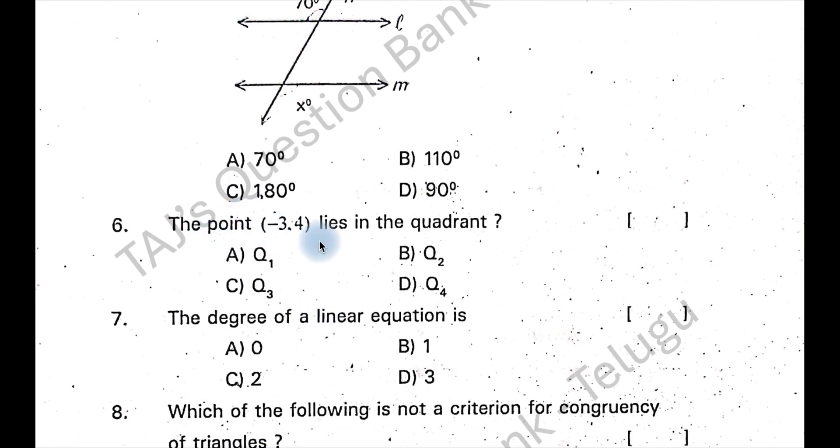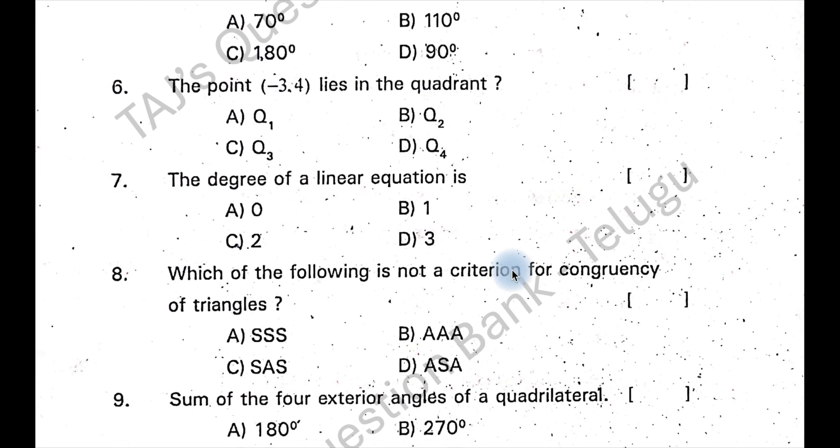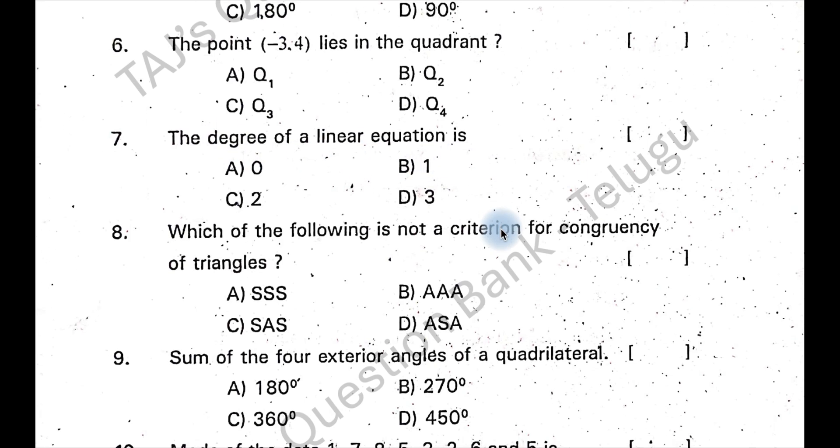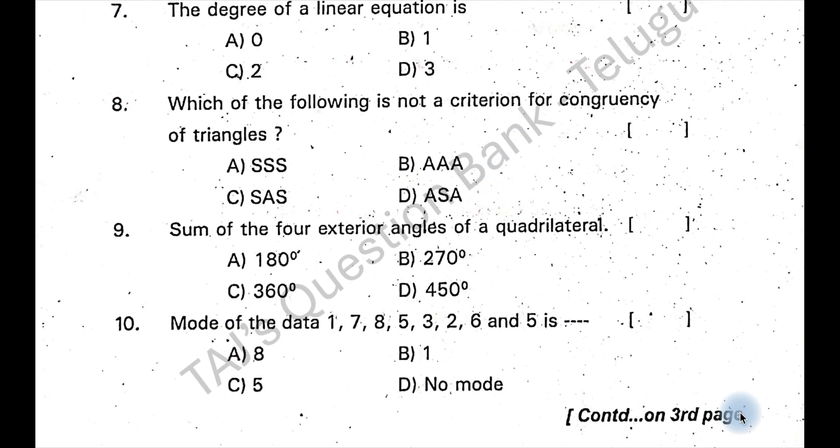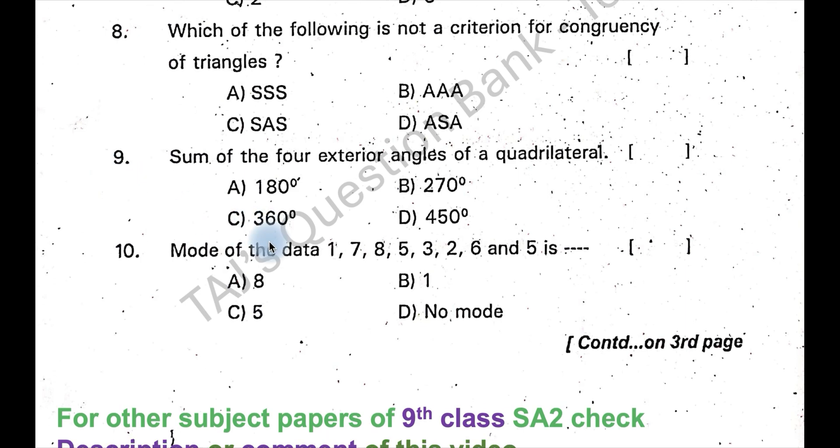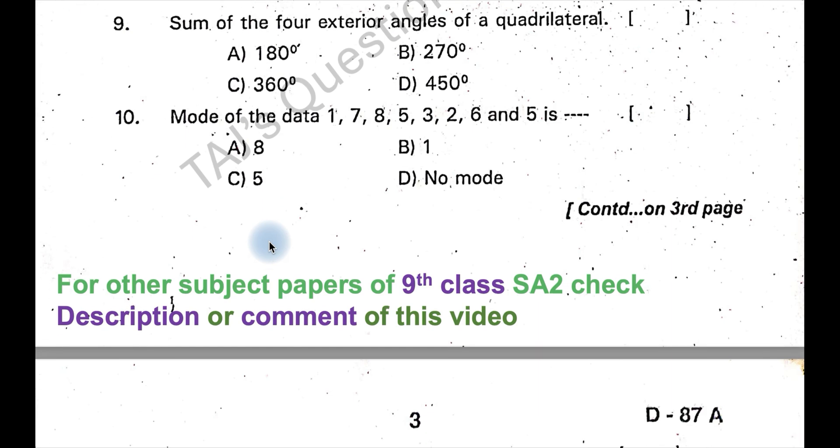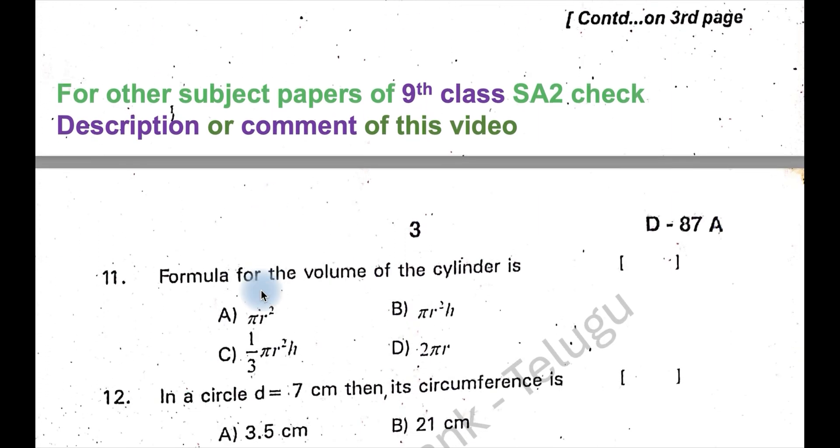Point minus 3 and 4 lies in quadrant 2. The degree of linear equation is 1. The answer for 9 is option C, 360 degrees.